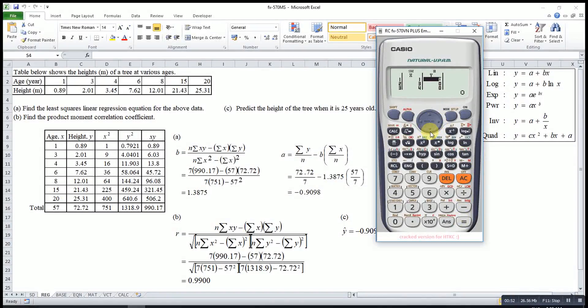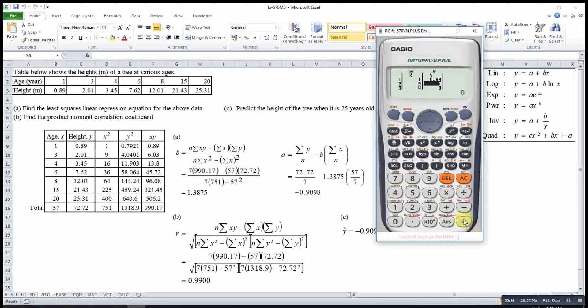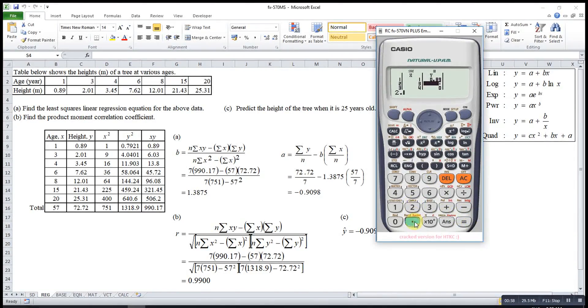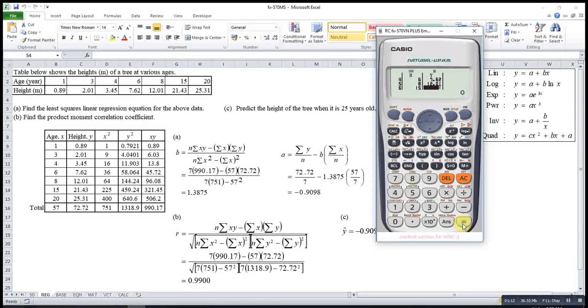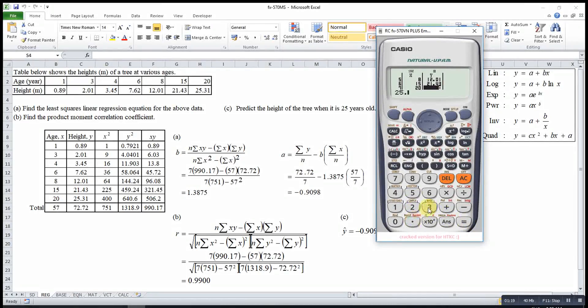then for y, 0.89, then 2.01, 3.45, 7.62, 12.01, 21.43, 25.31.